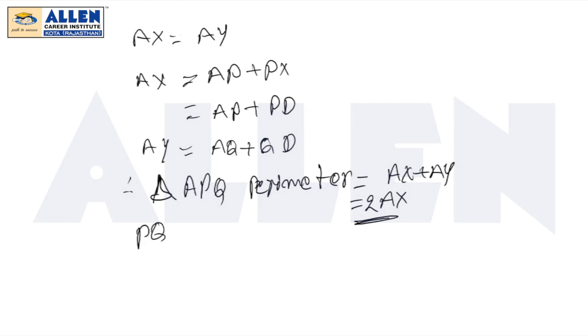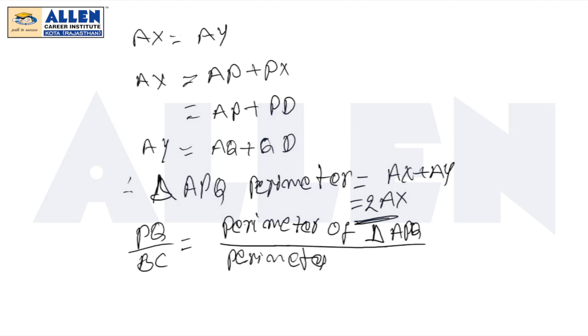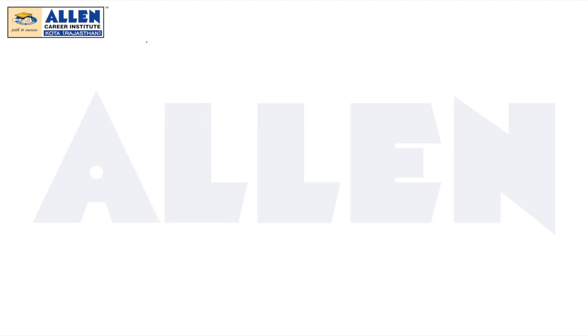PQ by BC equals the perimeter of triangle APQ divided by perimeter of triangle ABC. That is two times AX, which equals two times S minus A divided by 2S. Similarly, RM by AC equals two times S minus B by 2S, and SN by AB equals two times S minus C by 2S.